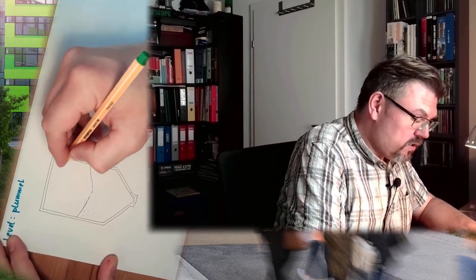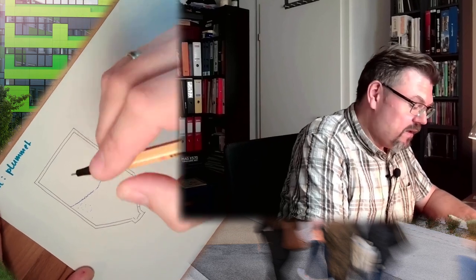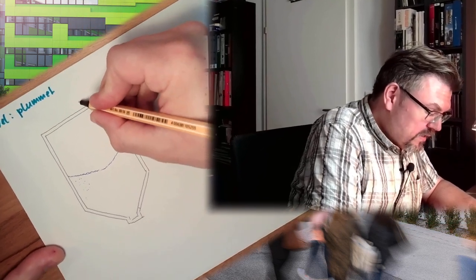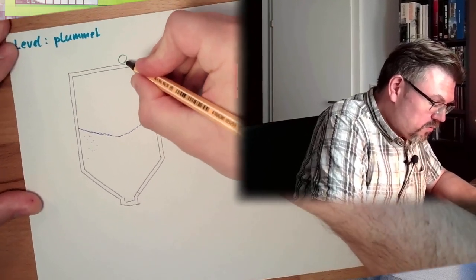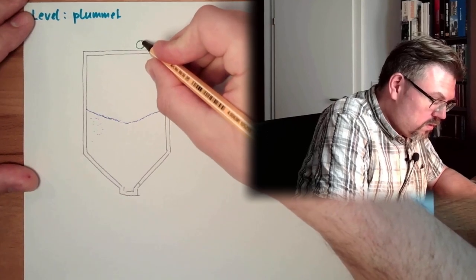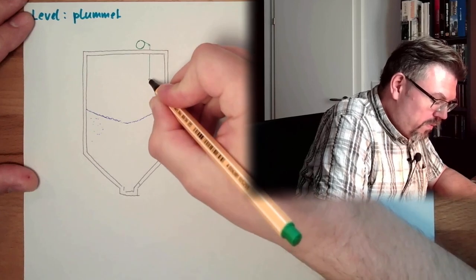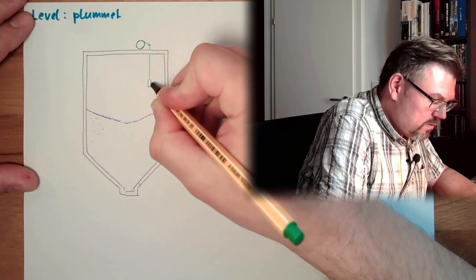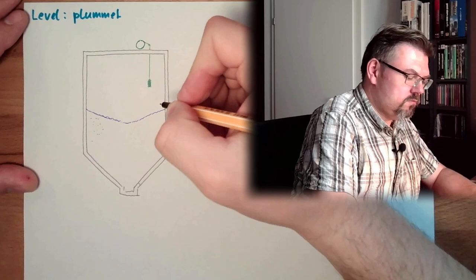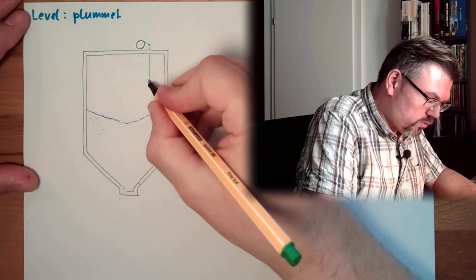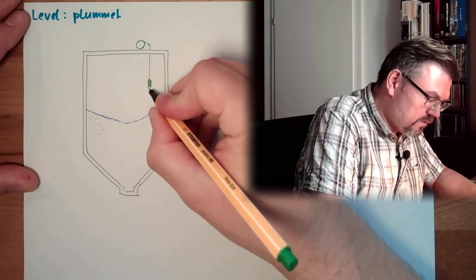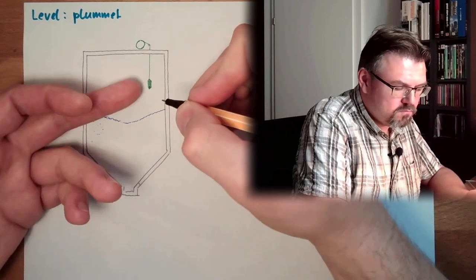What is the plummet method? Well, we have again a silo or something like this, and we want to measure the height, the filling height. Right, what we actually do is we mount here some sort of spool, rope, and at this rope we mount the plummet, load, load weight in German, plummet, simply some mass.